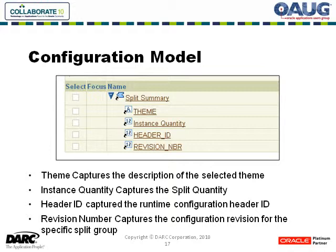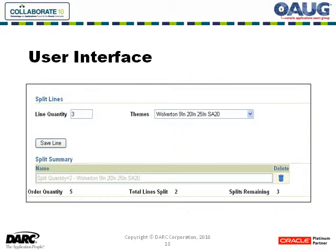This is a look at what's inside the model debugger and the configuration model. We completed a component called split summary. Part of the summary was a text feature called the theme, an instance quantity, the header ID, and the revision number — all numeric integer features. The theme captures the description of the selected theme, the instance quantity captures the amount of the split, the header captures the runtime configuration header ID, and the revision number captures each split group revision number.